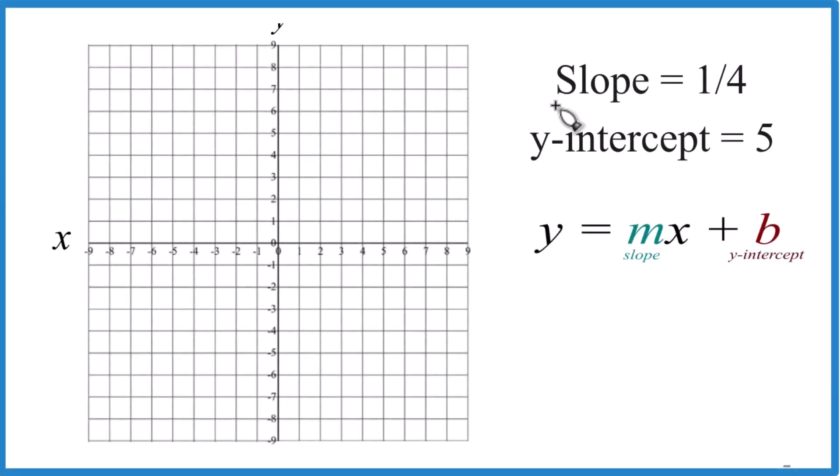In this video, we'll graph the line where we have a slope of 1/4 and a y-intercept of 5.